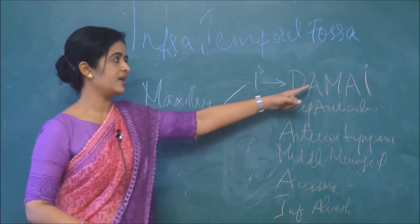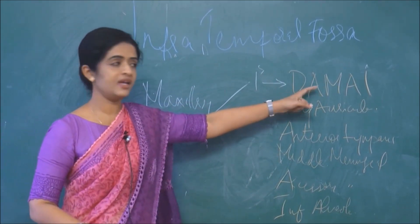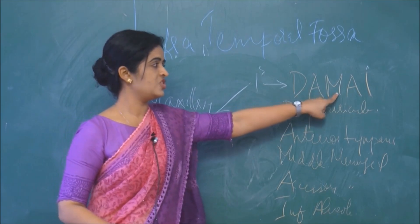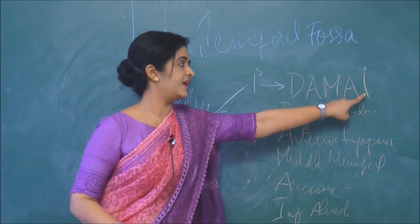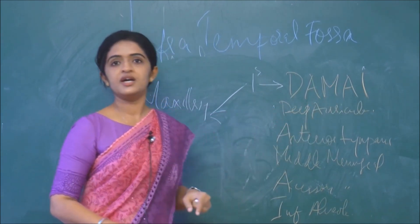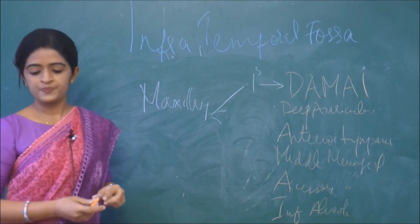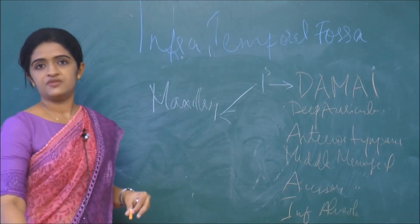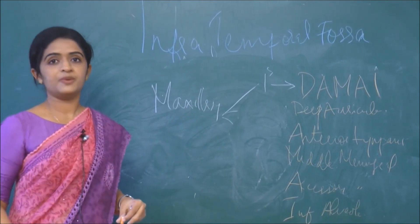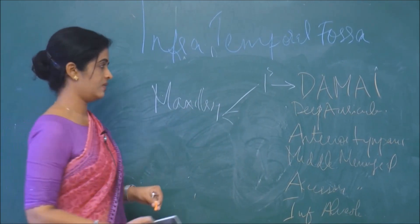To recap, the branches from the first part of the maxillary artery are: deep auricular, anterior tympanic, middle meningeal, accessory middle meningeal, and inferior alveolar.